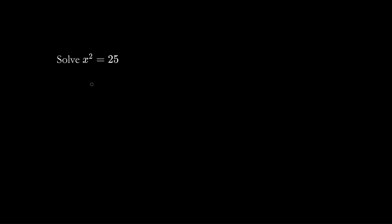Let's solve for x. We square root both sides and we have x equals plus or minus the square root of 25, which is plus or minus 5. When you have a variable squared, you take both the positive and the negative answers.